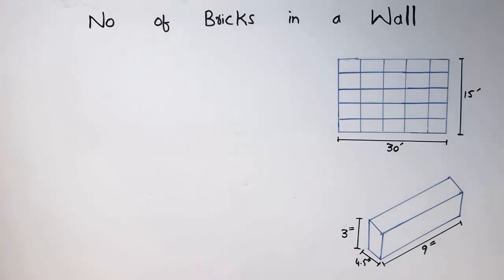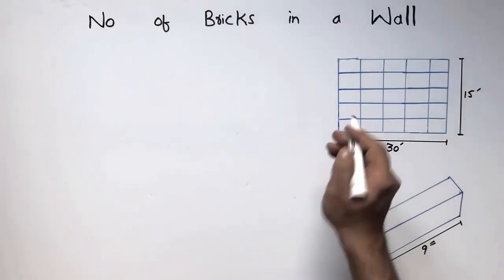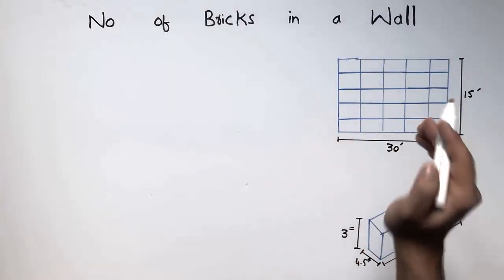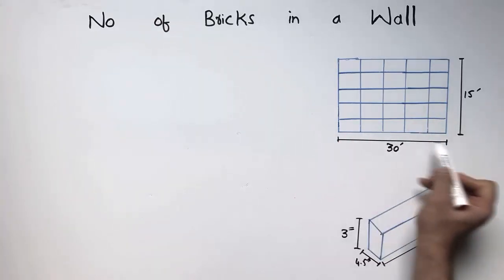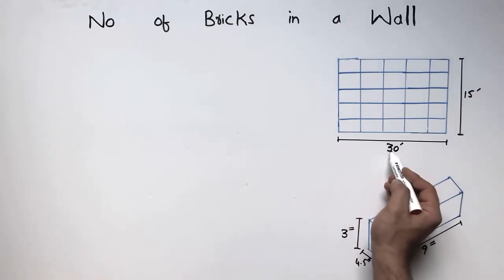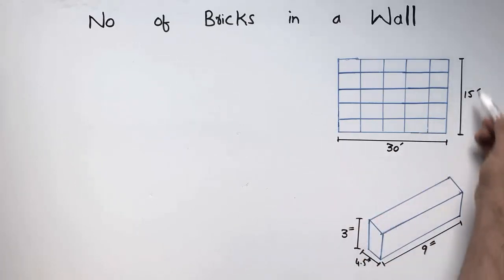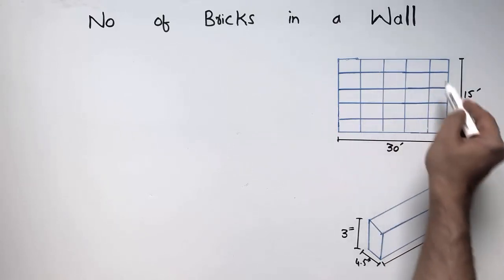Hello guys, welcome back to the 7 Engineering YouTube channel. Please subscribe to our channel for daily 7 Engineering content. Today our lecture is about the number of bricks in a wall. In this lecture we are going to find the number of bricks in a wall. Consider a wall of any dimension — in this case the length is 30 feet and the height is 15 feet, and we are interested to find the number of bricks in this wall.